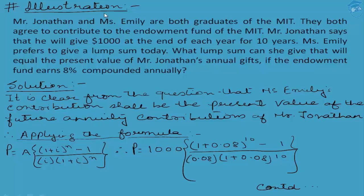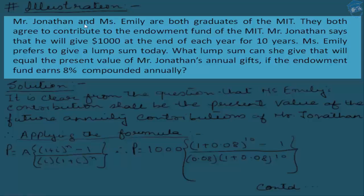Now let's take another illustration to understand the concept. If you pay good attention, you will understand why exactly I was trying to develop the concept that the present value of the future stream of annuity is in actuality the same amount which, if invested as a lump sum for n years at i percent rate of interest, will fetch the same future value as obtained by calculating the future value of an annuity. Look at the question carefully: Mr. Jonathan and Ms. Emily are both graduates of MIT. They both agree to contribute to the endowment fund of MIT.